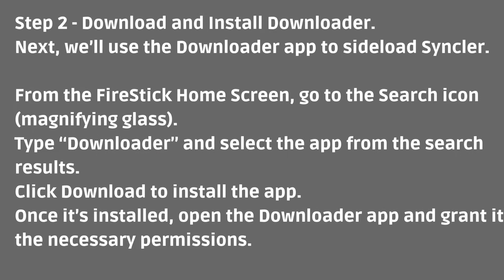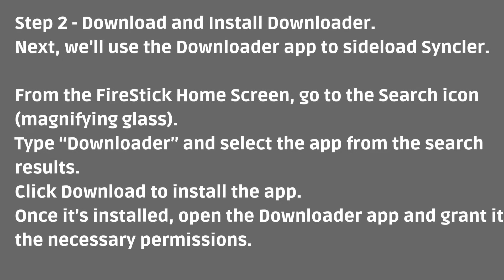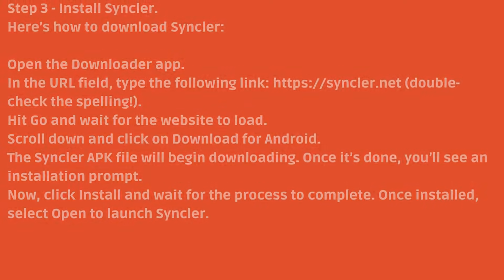Step 2: Download and install Downloader. Next, we'll use the Downloader app to sideload Sinclair. From the Firestick home screen, go to the search icon — the magnifying glass. Type Downloader and select the app from the search results. Click Download to install the app. Once it's installed, open the Downloader app and grant it the necessary permissions.